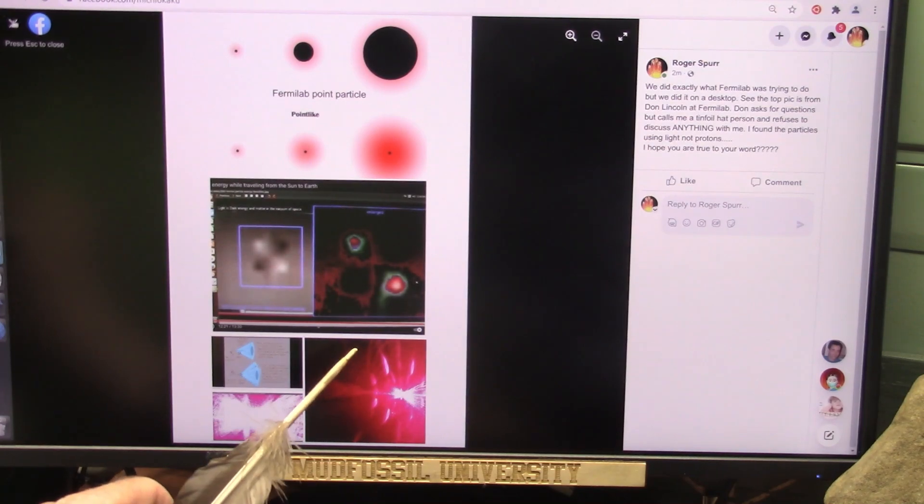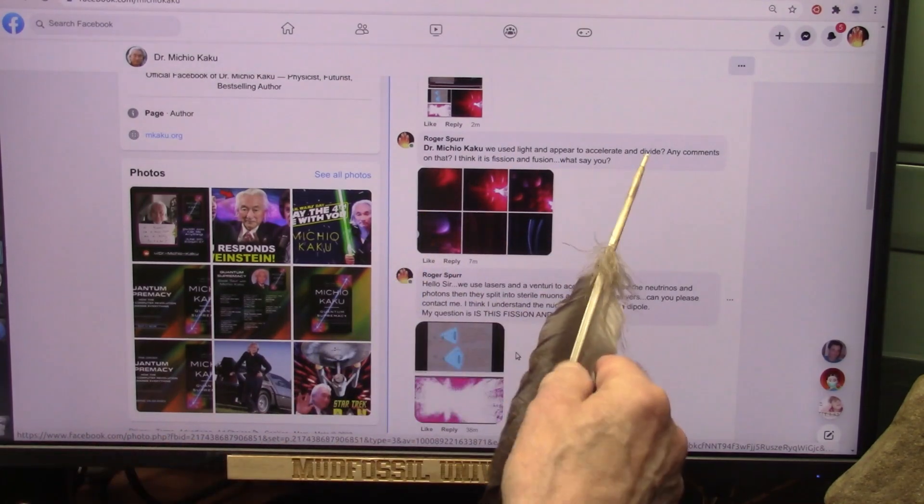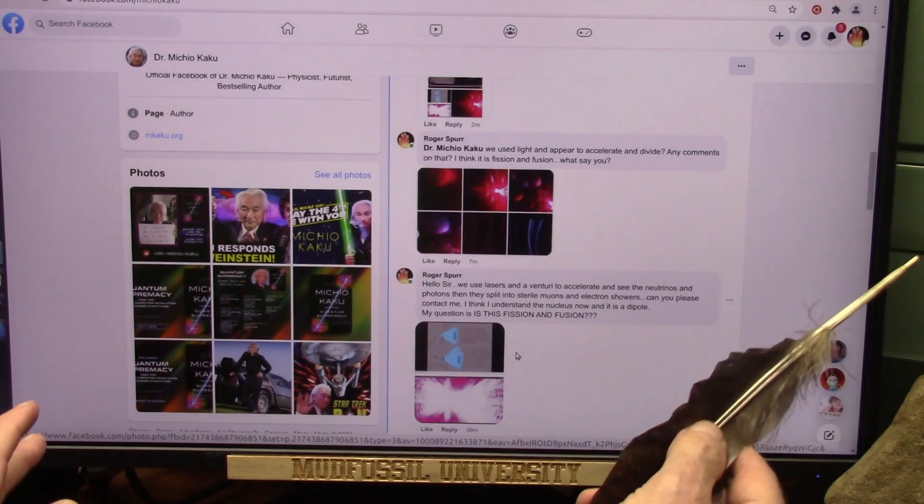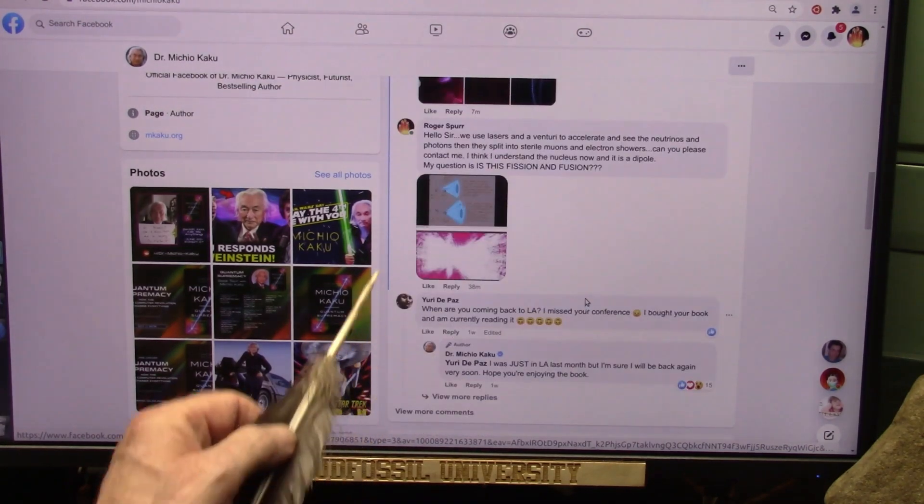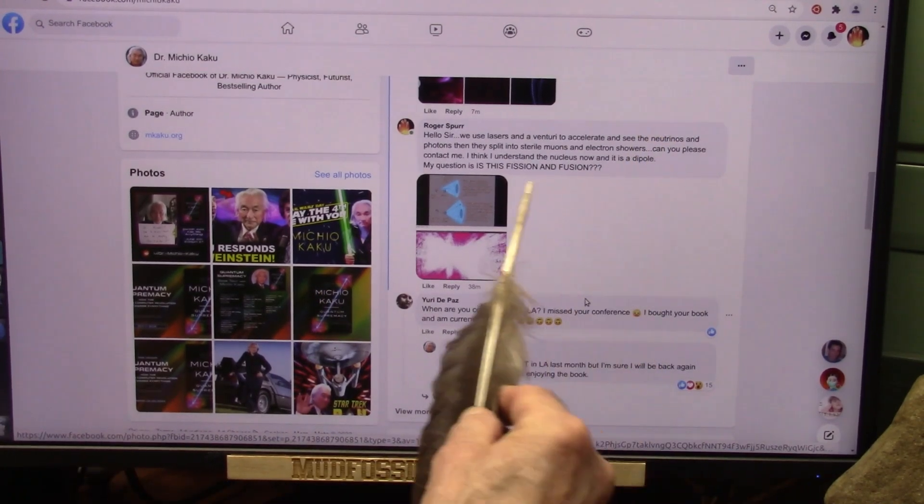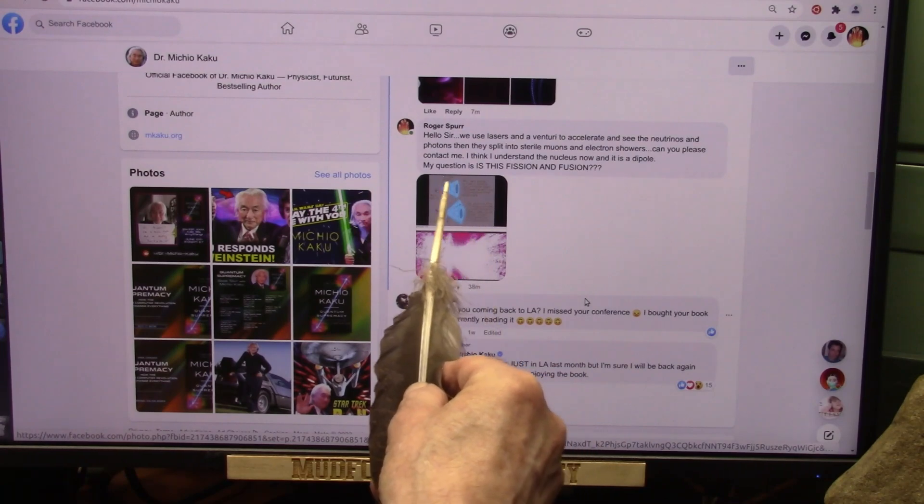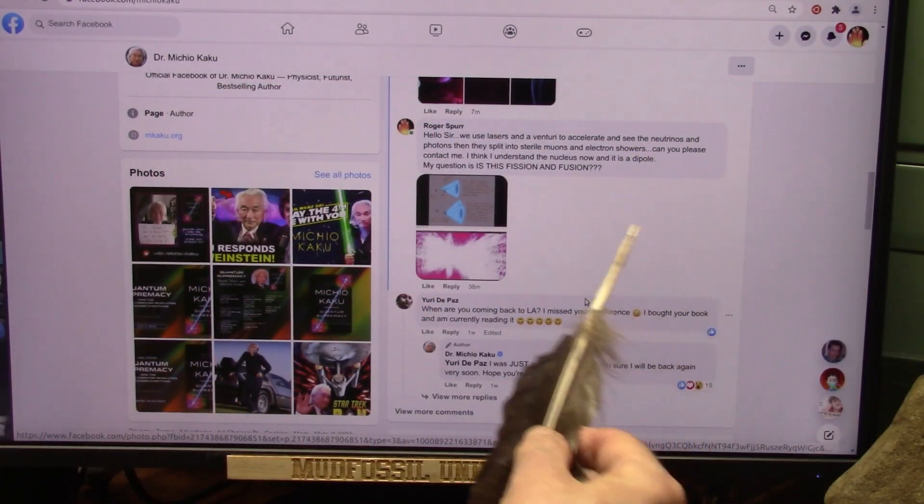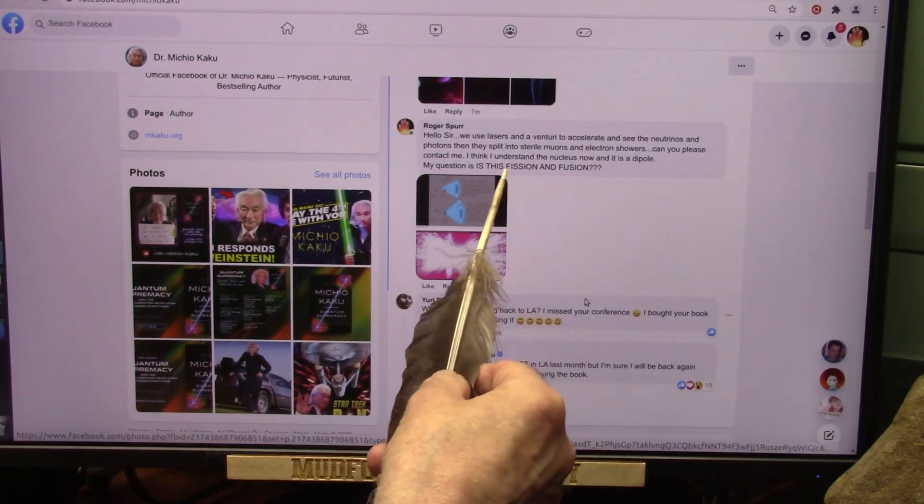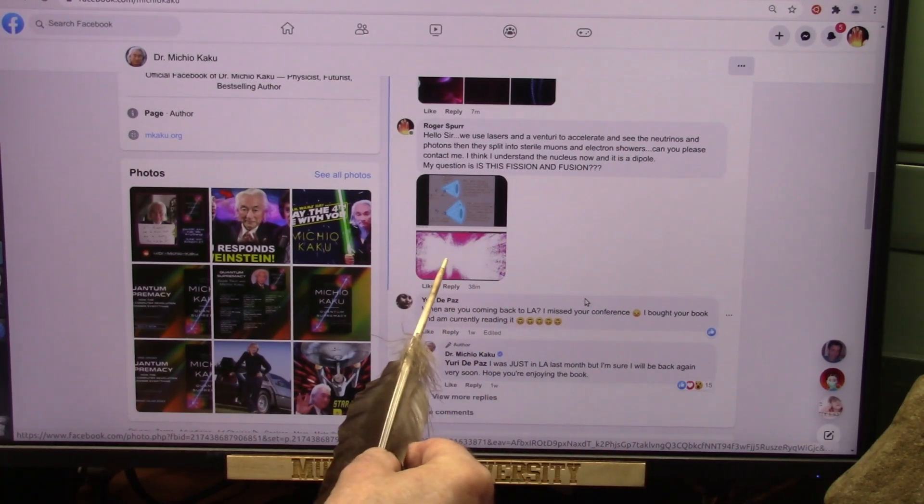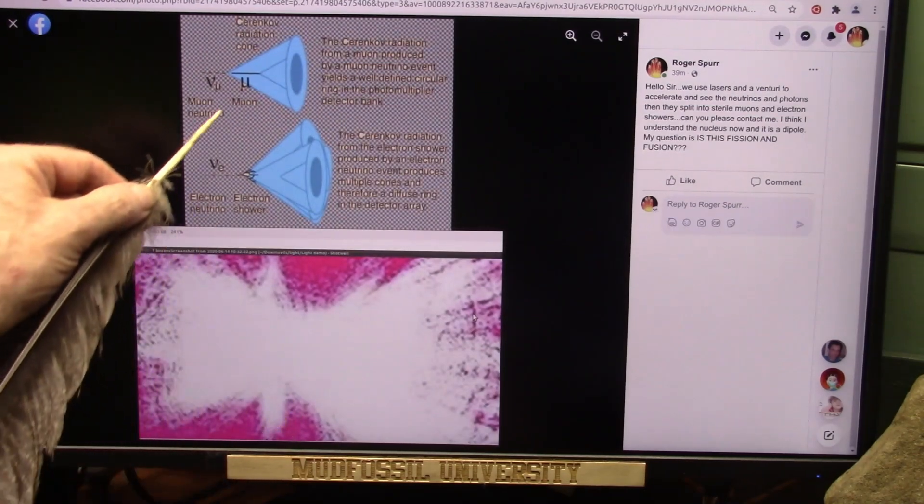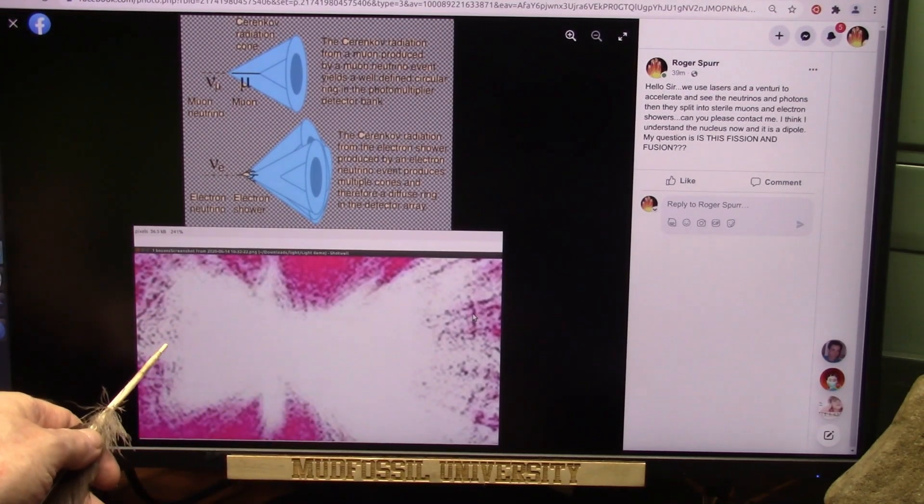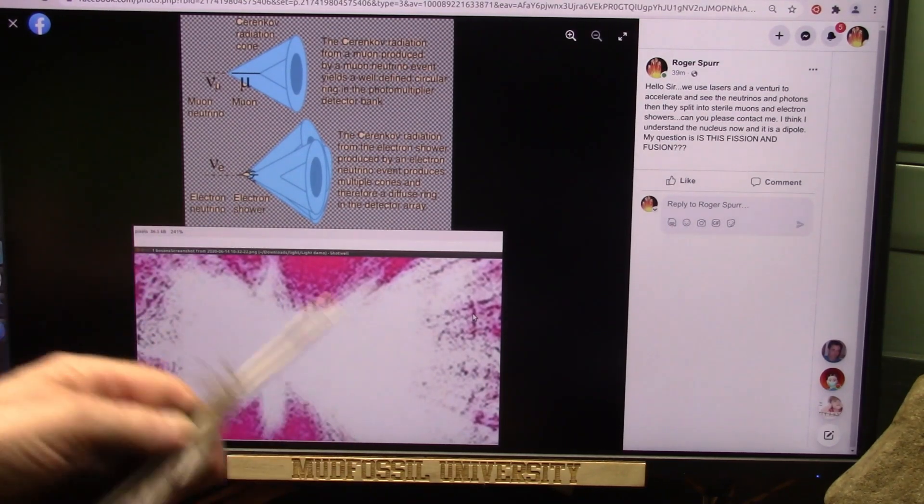I asked him about that, is this fission and fusion? We use light and it appeared to accelerate and divide. The light divided apart. Any comments on that? I think it's fission and fusion, what say you? We use lasers to eventually accelerate and see the neutrinos, photons, then they split into sterile muons and electron showers. Can you please contact me? I think I understand the nucleus, which is not the way they think it is, not at all. It is a dipole, not a big positive ball. My question is, is this fission and fusion? That right there is what they call sterile muons coming from muon electron neutrinos stuck together, the black and white ball. This turns into the shower, the black goes sterile. That is fission, it breaks apart. That's fusion when it comes back together.